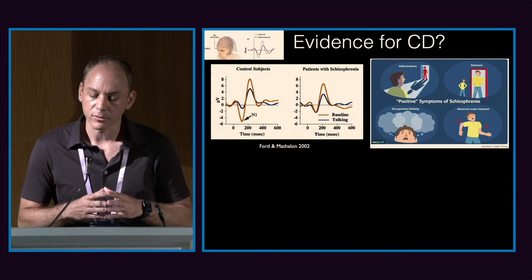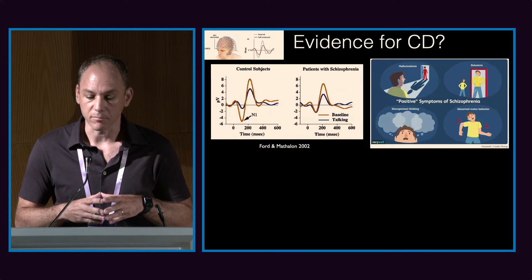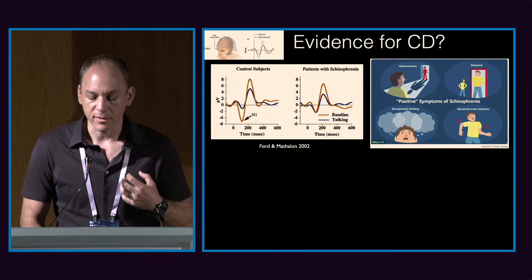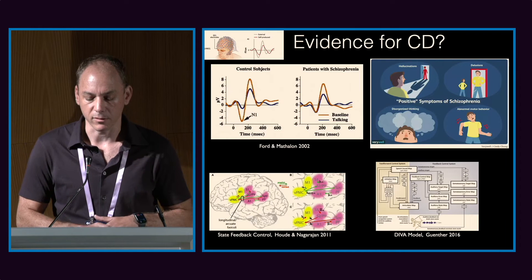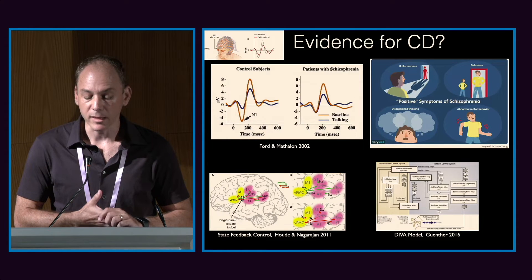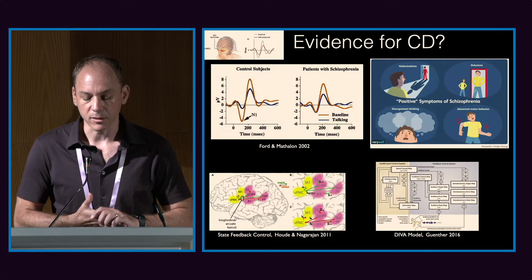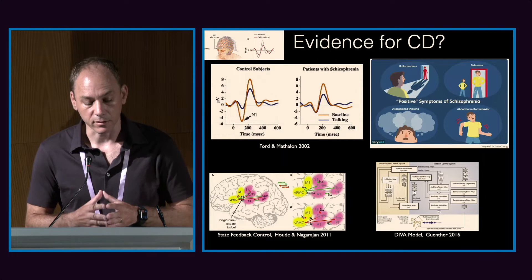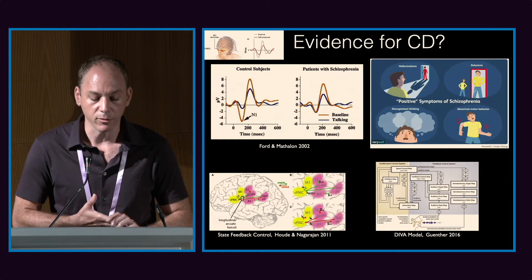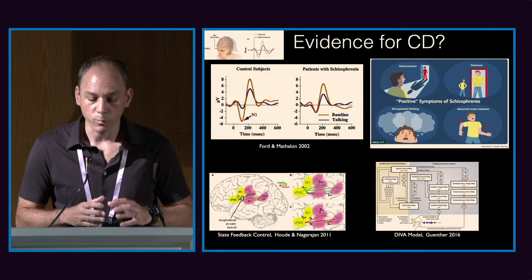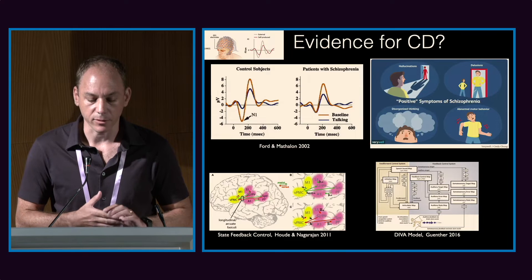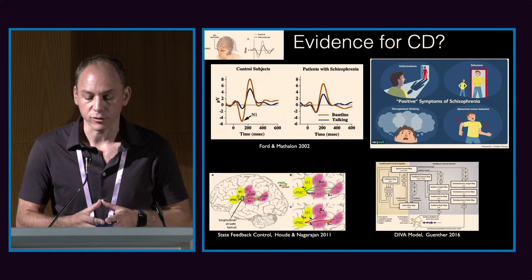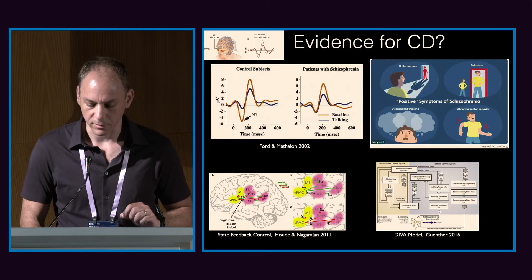Although auditory suppression in primates has been extremely well described, the source of this motor signal is really unknown. Different speech models theorize it's coming from motor cortex, inferior frontal gyrus, or premotor SMA, but there's no real tangible evidence for a source of the signal. The only robust evidence is for the suppression downstream in auditory cortex.